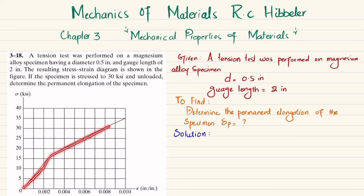So you can see this is the stress-strain diagram for magnesium alloy, and we have to find the permanent elongation if it is stressed to 30 ksi and then unloaded. Let's start with the solution.